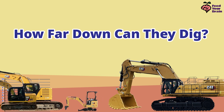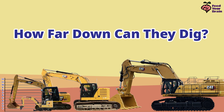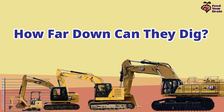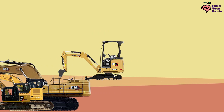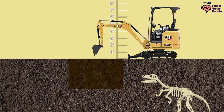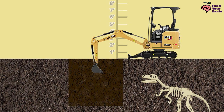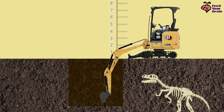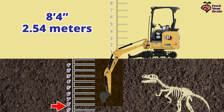So how far down can each of these excavators dig? Let's look at each one and find out. Let's start with the mini-excavator. This mini-excavator can dig down to 8 feet 4 inches into the ground. That's pretty far down.